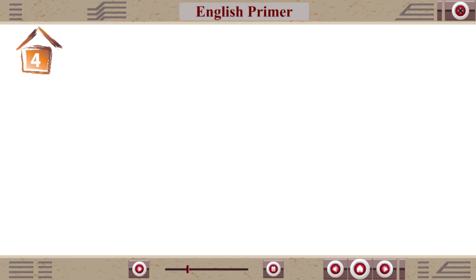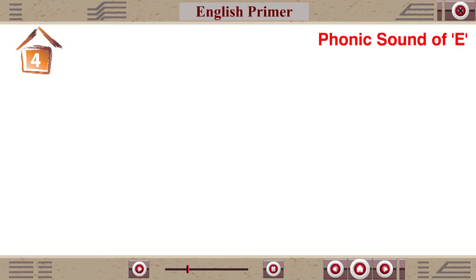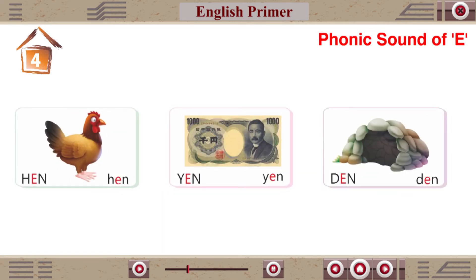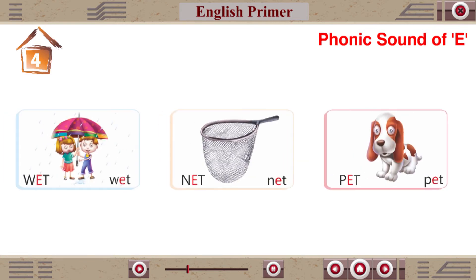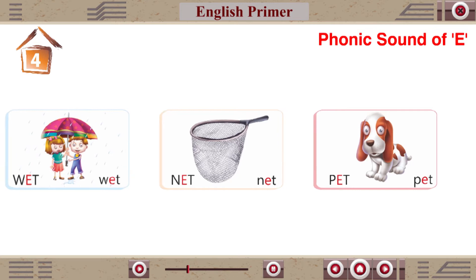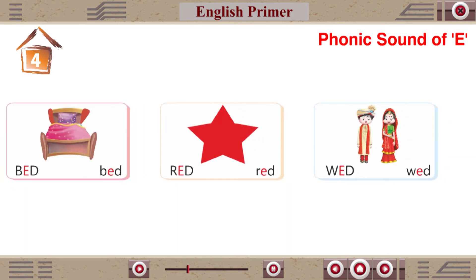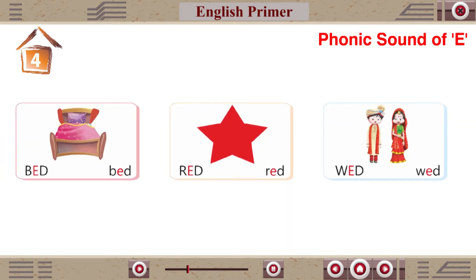Chapter 4: Phonic sound of E. Hen, Den, Wet, Net, Fet, Bed, Red, Wet.